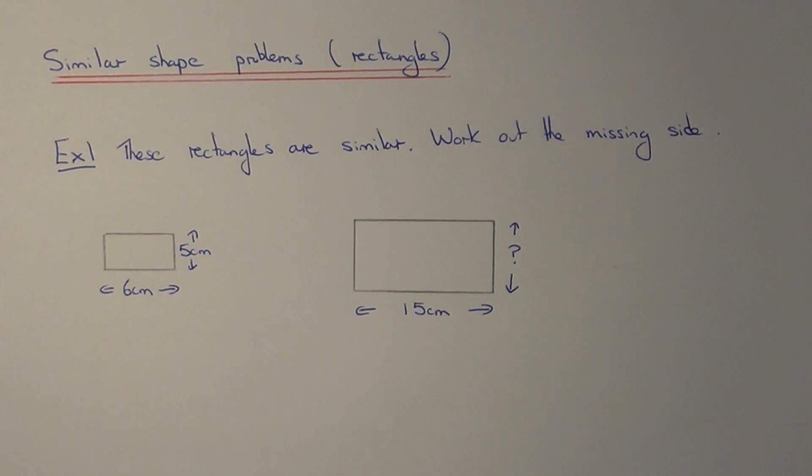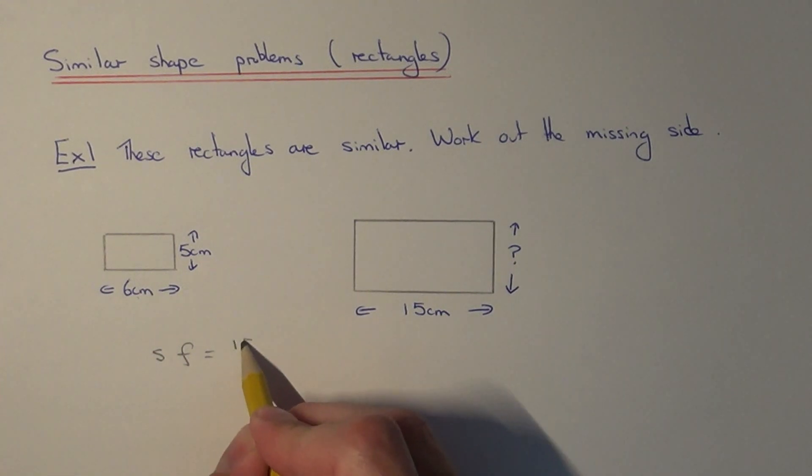And you can do this by dividing the matching lengths of the rectangles. So in this example here you can see we've got the bottom edge length of both rectangles. So if we divide the 15 by the 6, that will give us our scale factor. So the scale factor of the enlargement will be 15 divided by 6.